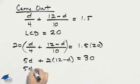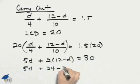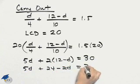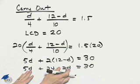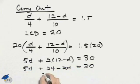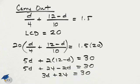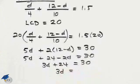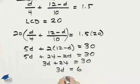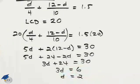Simplifying using the distributive property here, we'll have 5D plus 24 minus 2D equals 30, and then we can combine like terms. 5D minus 2D is 3D plus 24 equals 30. We can subtract 24 from both sides of the equation, so we'll have 3D equal to 6, and then divide both sides by 3, so we have D is 2.